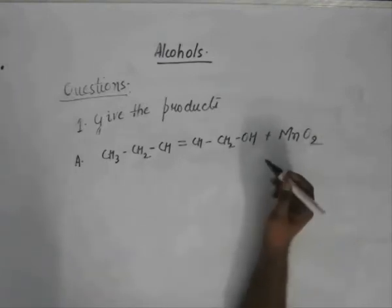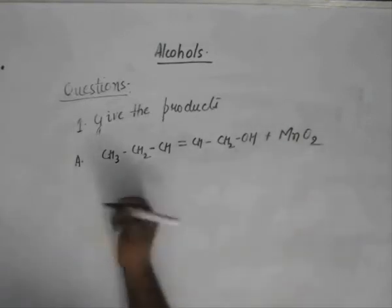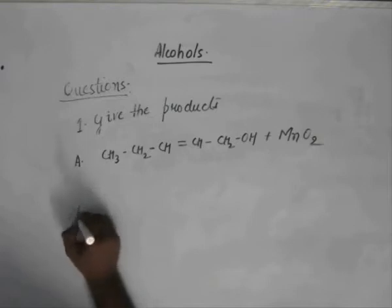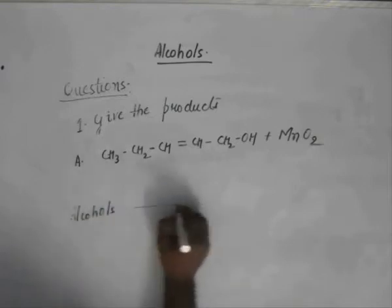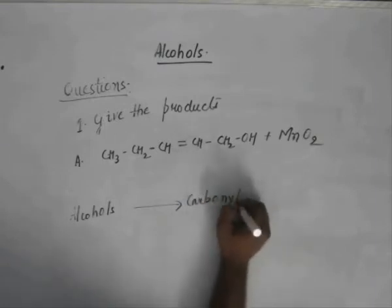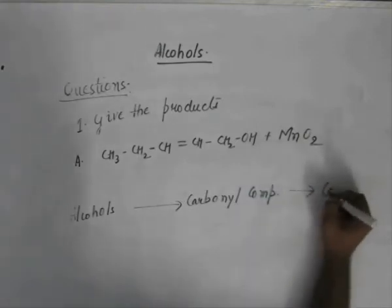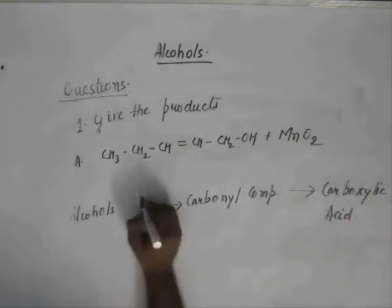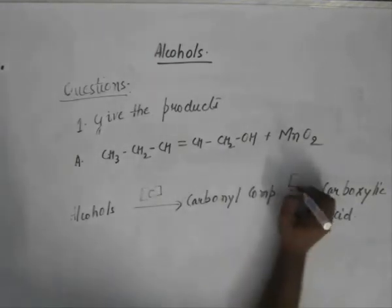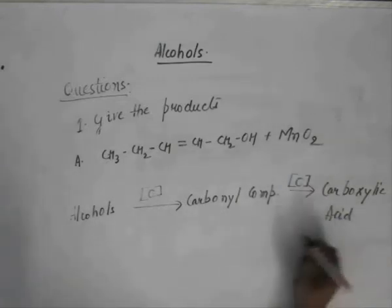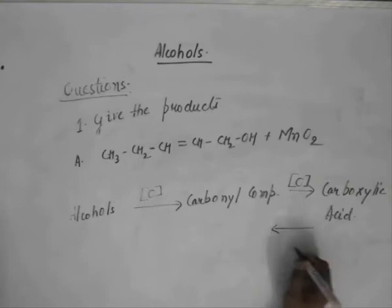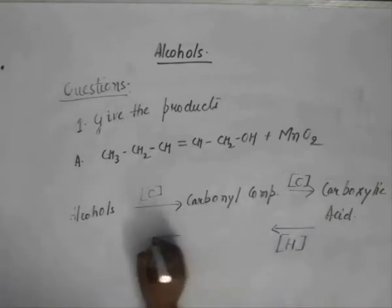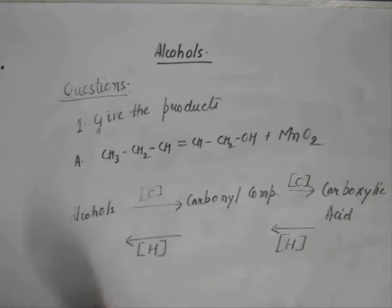One more concept I would like to give you in between. When we talk about oxidation and reduction products, we have alcohols, we have carbonyl compounds and we have carboxylic acid. If we try and oxidize alcohol, we end up with a carbonyl compound and if we try and oxidize carbonyl compounds, we end up with carboxylic acid. The reverse is also true. If we try to hydrogenate carboxylic acid, we have carbonyl compounds and if we try to hydrogenate carbonyl compounds, we end up with alcohol.